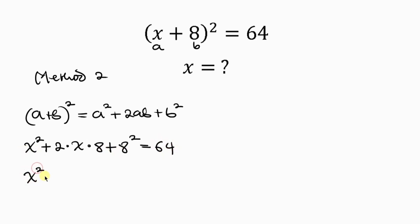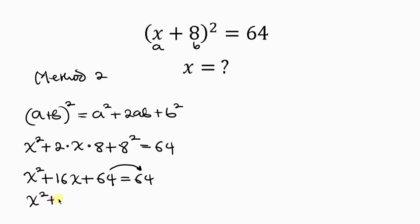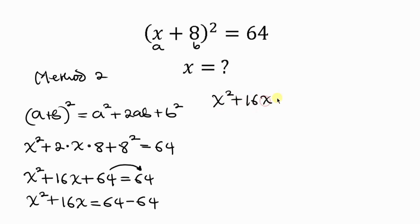That gives us the expansion: x² + 16x + 64 = 64. Moving 64 to the right hand side, we get x² + 16x = 64 − 64, which simplifies to x² + 16x = 0.